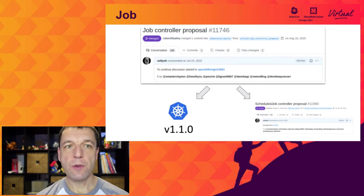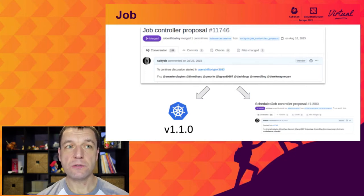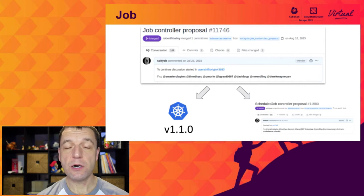Eventually, we agreed to split the topic into two. First, the original proposal morphed from describing distributed cron functionality to a primitive which allows running a task to completion. Today, this is simply known as a job resource. This way, our focus slightly shifted and we dived into implementing jobs, which were part of the 1.1 release of Kubernetes.